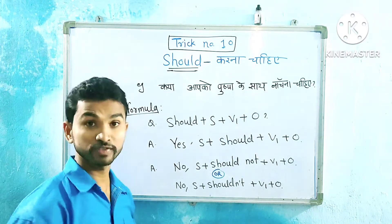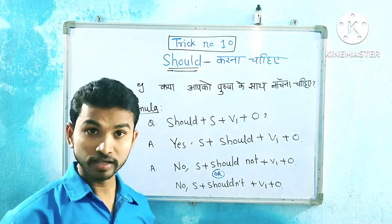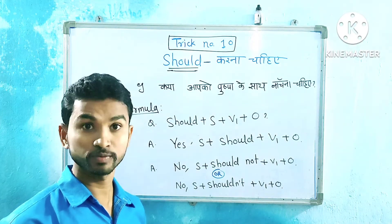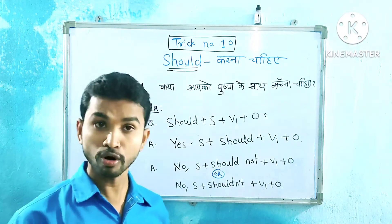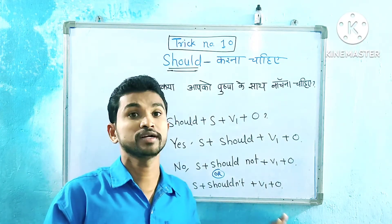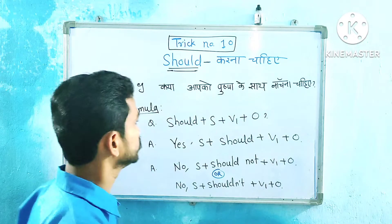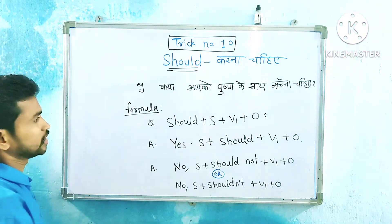Example: 'Should you dance with Pushpa?' — that is the question form. Yes: 'I should dance with Pushpa.' Otherwise, no: 'I shouldn't dance with Pushpa.' This slide covers the full pattern — question, positive answer, and negative answer.